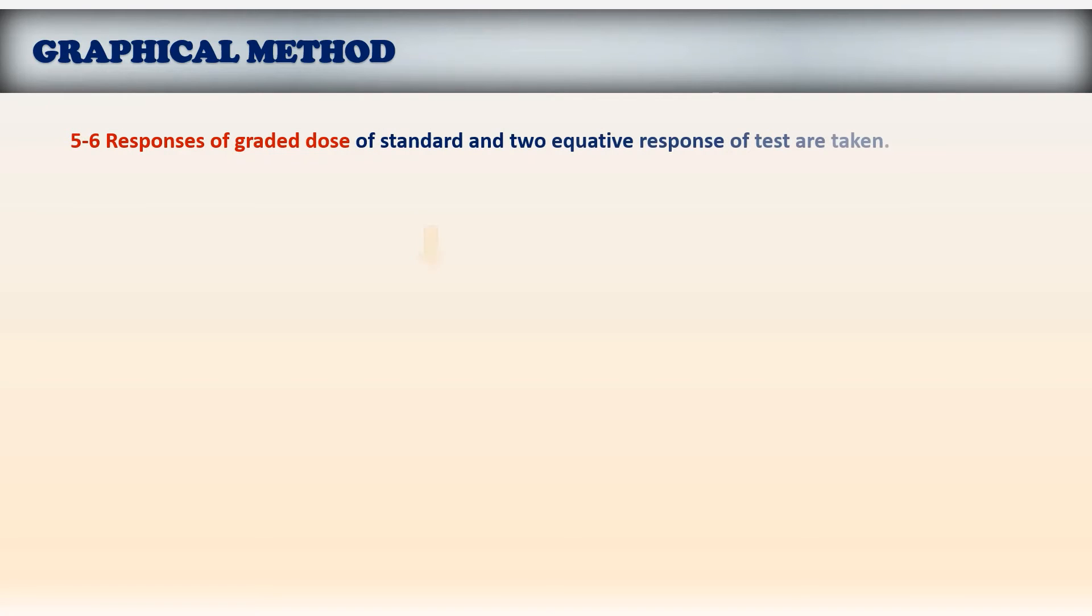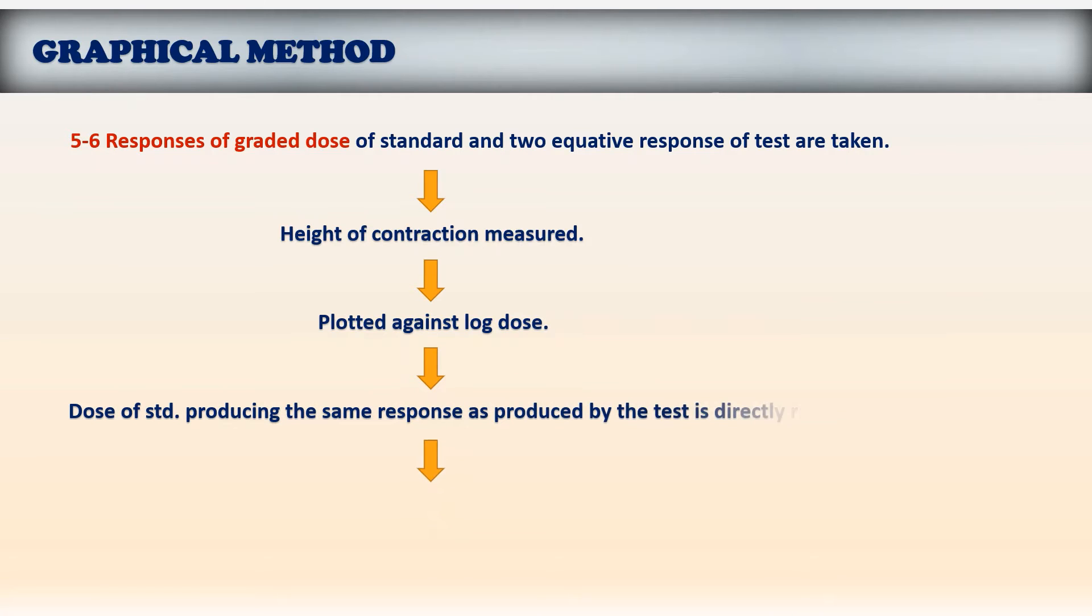Next about the graphical method. Here 5 to 6 responses of the graded dose of the standard are taken and then 2 equi-active responses of the test samples are taken. The height of contraction is measured and plotted against the log dose. The dose of standard producing the same response as produced by the test is directly from the graph. And the concentration of the test sample can be determined using the formula.